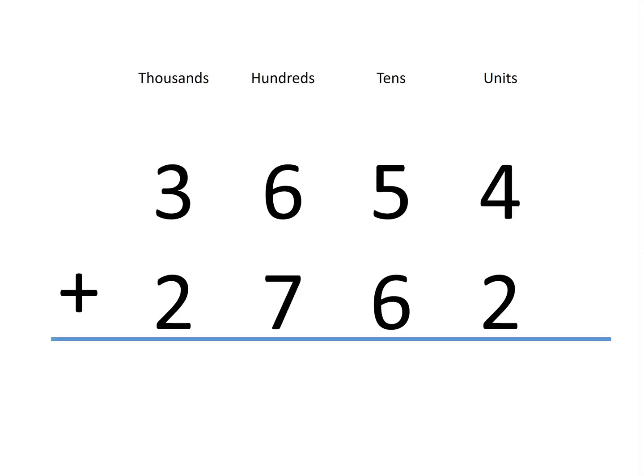Now, let's see what that looks like in column form. If we start by adding the units, 4 and 2 units gives us a total of 6 units.